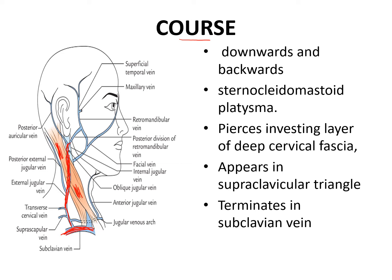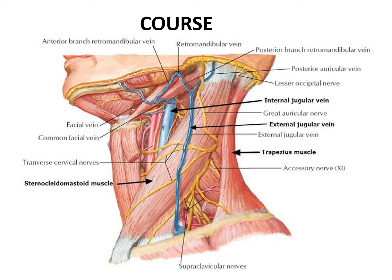In the next slide we can see where the supraclavicular triangle is. The external jugular vein runs downwards and backwards across the sternocleidomastoid muscle, overlapped by the platysma. The inferior belly of the omohyoid forms one boundary of the supraclavicular triangle. The external jugular vein pierces the investing layer of the deep cervical fascia, appears in the supraclavicular triangle, and drains into the subclavian vein.